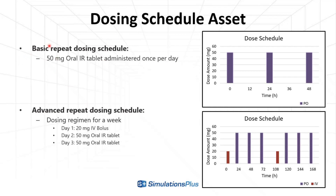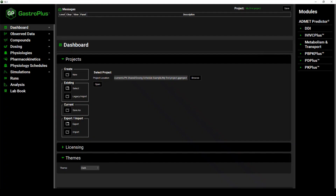The first one is the basic repeat dosing schedule, which will have 50mg of oral IR tablet administered once per day over the course of three days. Then we will cover the advanced repeated dosing schedule, which will have a dosing regimen for a week. Here, on the first day, we will administer 20mg of IV dose, which will be followed by a repeat dose of 50mg oral IR tablet administered once per day over the course of two days.